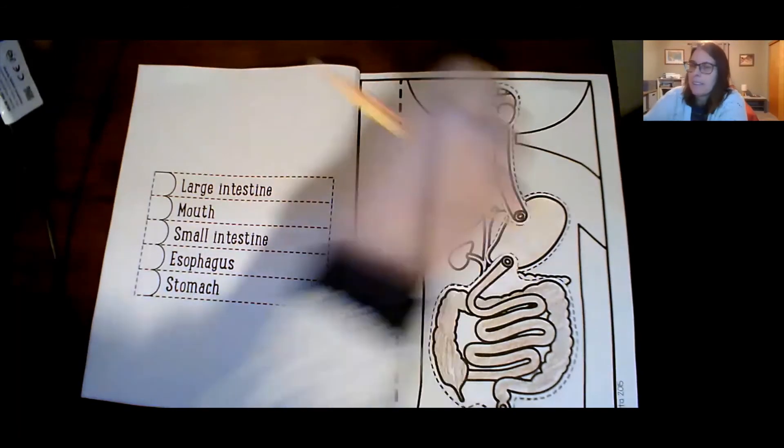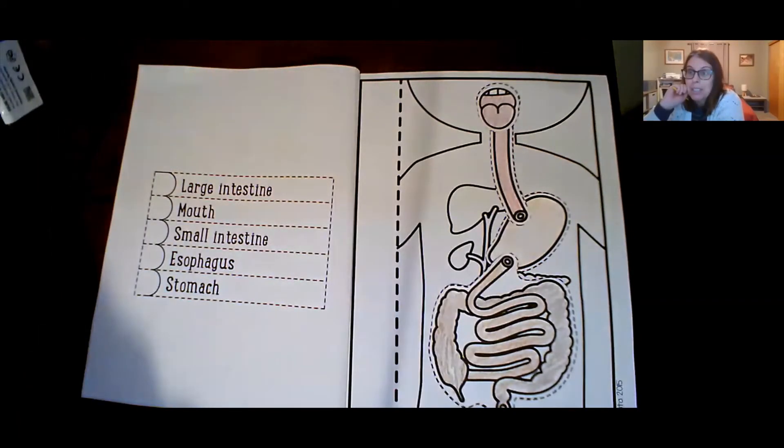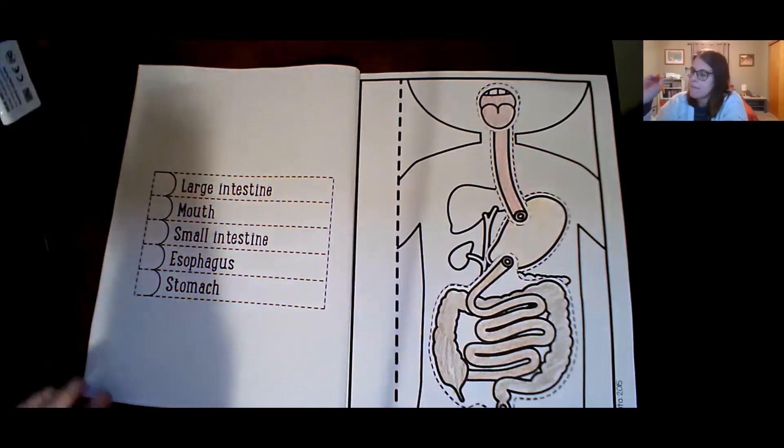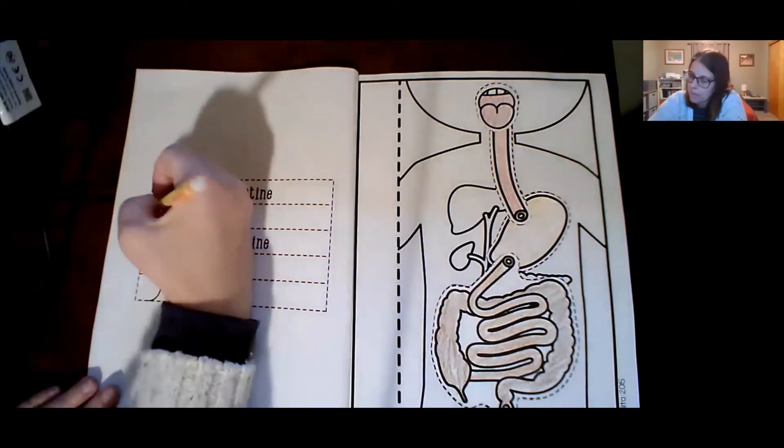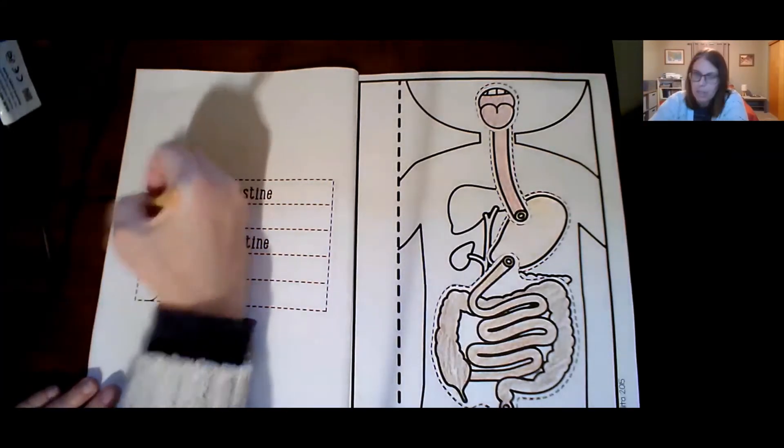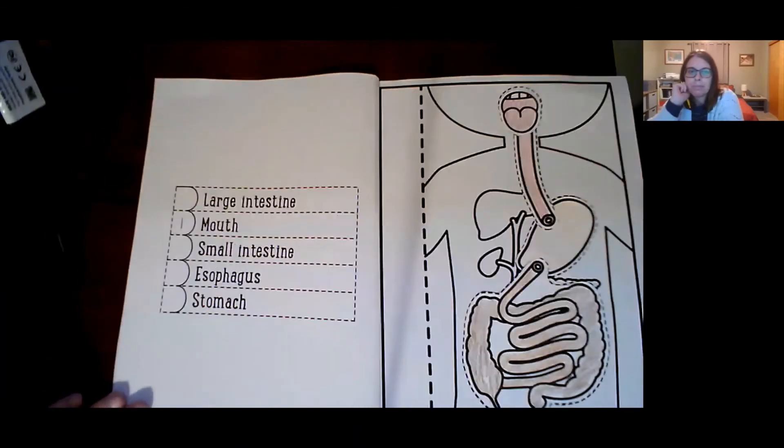Yep. The mouth. So let's find the word mouth. What letter does that start with? That's an M. So find the one that starts with an M. Mouth. And we'll put a number one by it. Mouth. Right there, we'll put a number one.